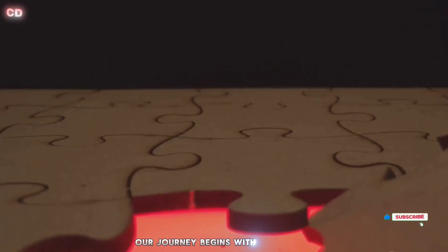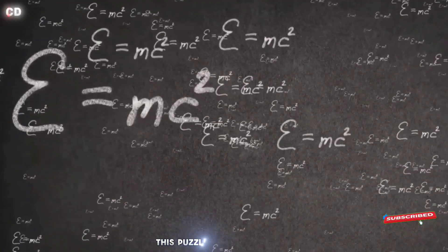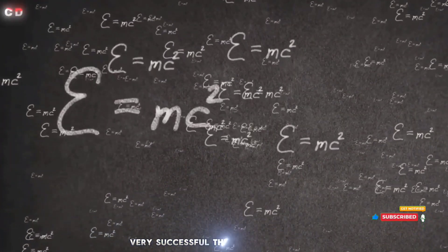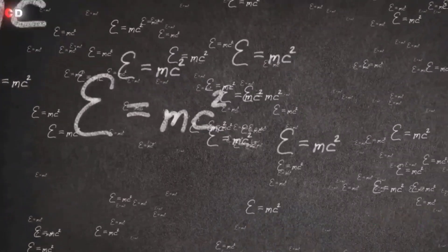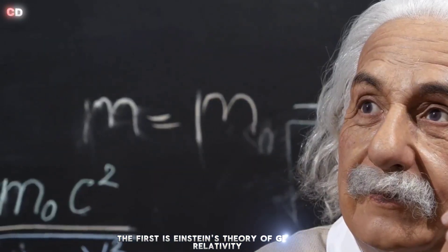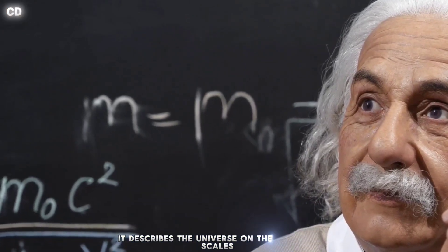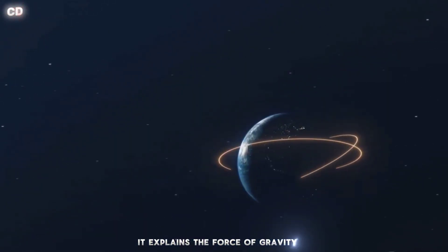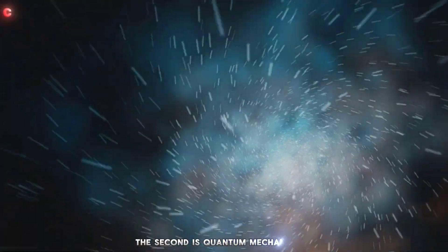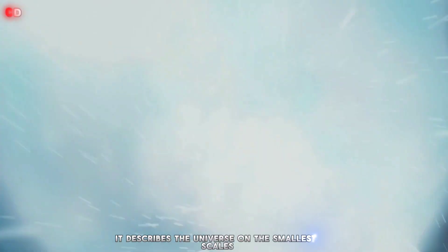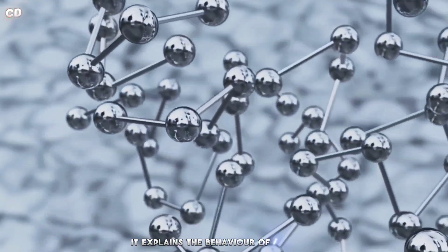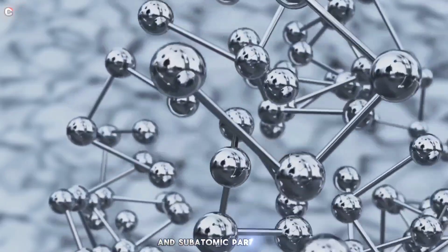Our journey begins with a puzzle. This puzzle involves two very successful theories in physics. The first is Einstein's theory of general relativity. It describes the universe on the largest scales. It explains the force of gravity. The second is quantum mechanics. It describes the universe on the smallest scales. It explains the behavior of atoms and subatomic particles.